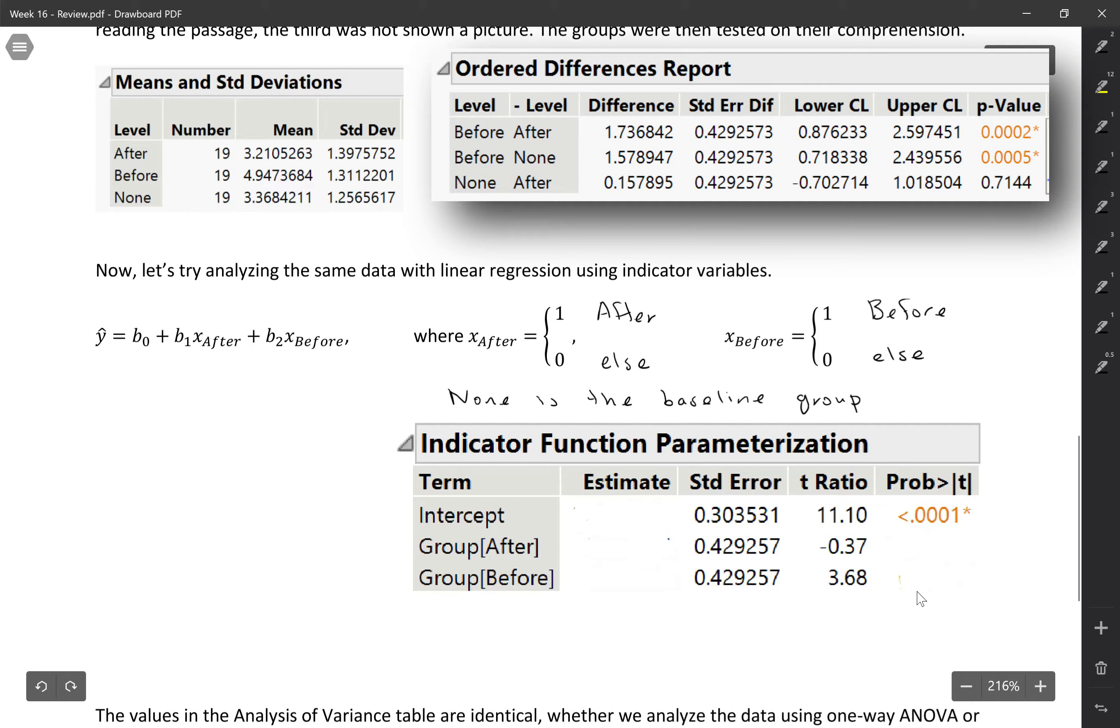And then see if you can use the output from the one-way ANOVA to fill those in. I've also whited out the p-values over here. So using the ordered differences report, see if you can figure out what p-values would correspond to those slopes. Pause the video here, take a few minutes to work on it.